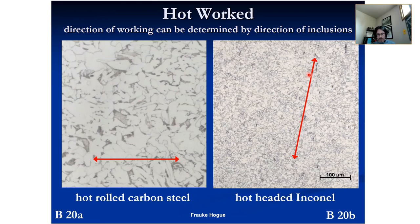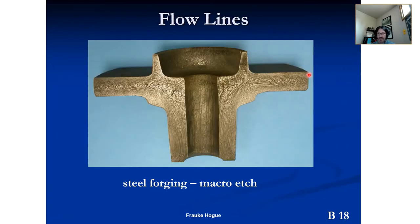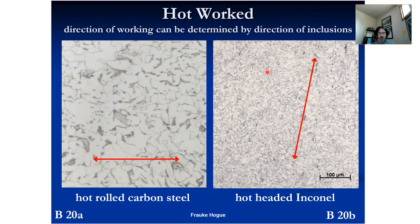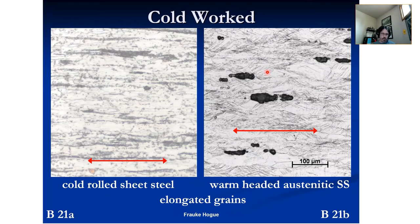Hot-headed: the steel bar is heated at the top and a die is bashed on it to make whatever you're making. Cold worked — this is cold rolled steel sheet. The grains are elongated due to the rolling. This is warm-headed austenitic stainless steel — still heated up, but not quite to the recrystallization temperature before the big hammer comes down. Casting — I do a lot of metal casting. Metal additive manufacturing is kind of the last process we're going to look at — namely electron beam melting (EBM) and selective laser melting (SLM).